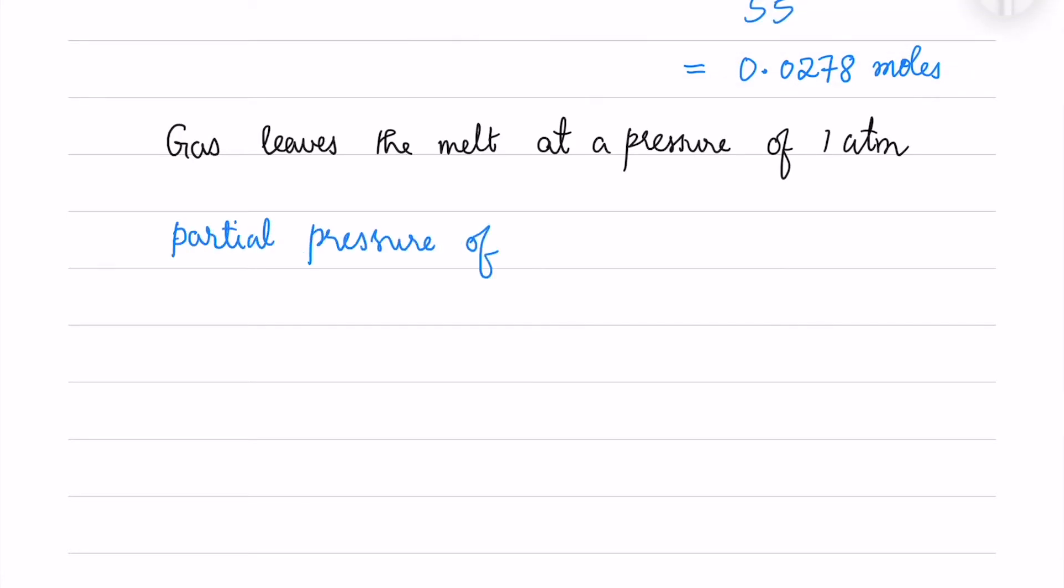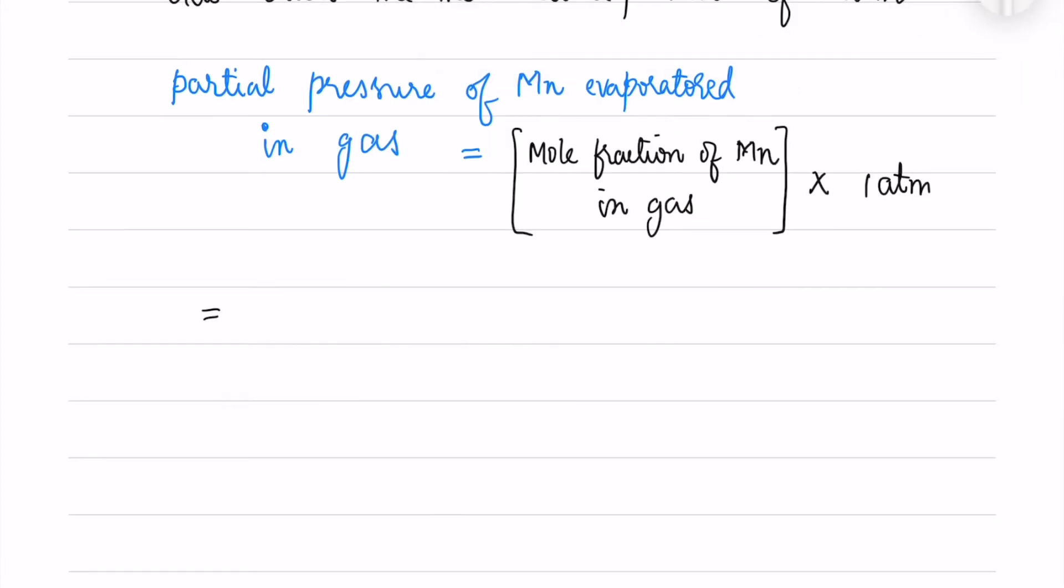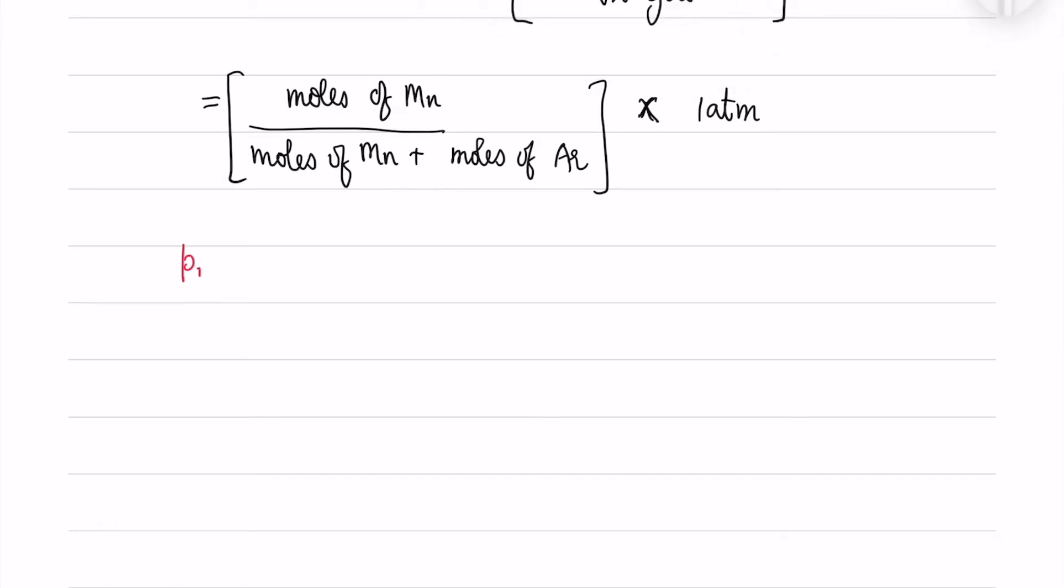The partial pressure of manganese in the gas is given as the mole fraction of manganese in gas multiplied with the total pressure of 1 atm. The moles of manganese divided by moles of manganese plus moles of argon times 1 atm gives us the partial pressure of manganese in the gas.